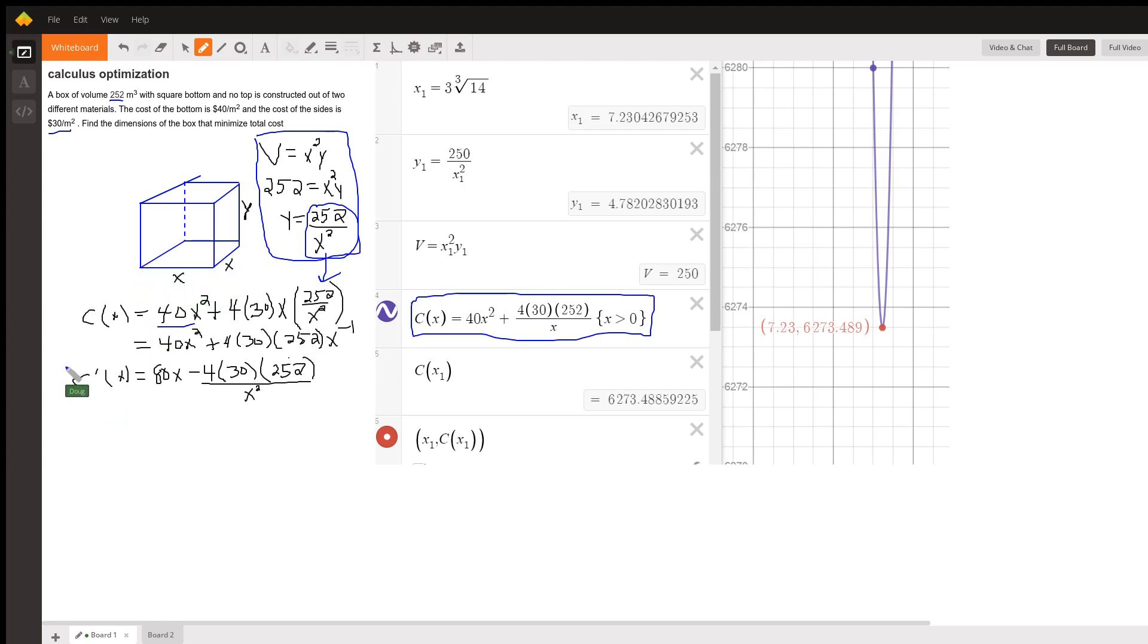So now we're going to take the derivative of the cost function, set it equal to 0, and see if we get a maximum or minimum. Well, if I take the derivative of the first term, I get 80x. Here I have to use the power rule, minus 1 times, reduce the exponent by 1. I can write that as all over x squared.